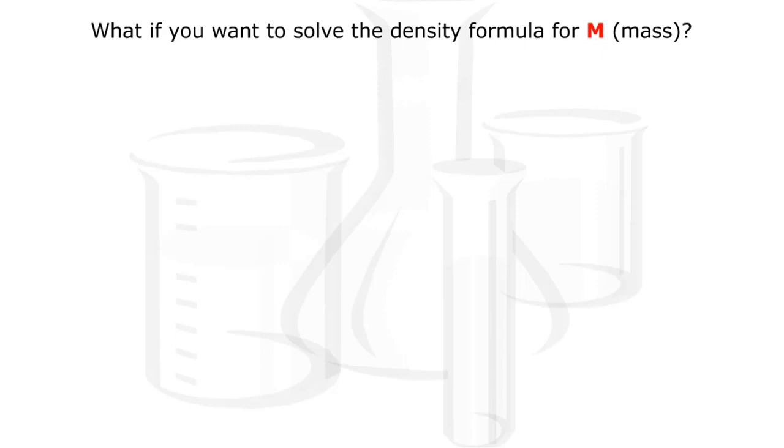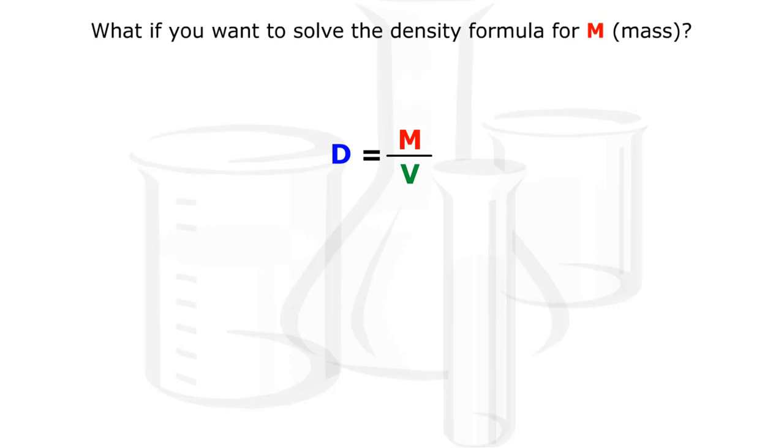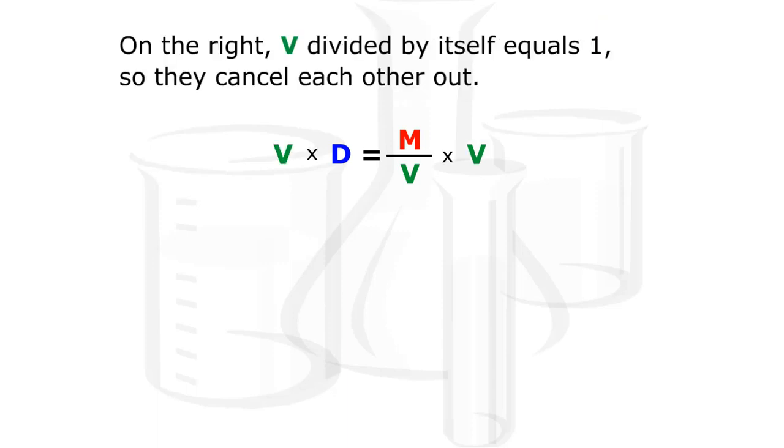What if you want to solve the density formula for M, mass? You have to get M all by itself. To remove a term that's below a dividing line, you multiply both sides by that term. So remove the V term by multiplying each side by V. On the right, V divided by itself equals one, so they cancel each other out. The formula is now solved for M: mass equals volume times density.